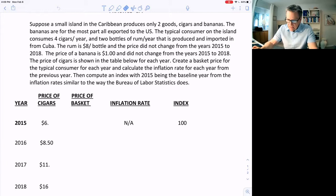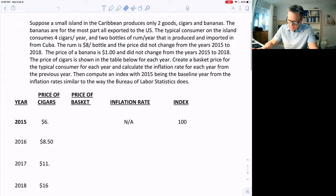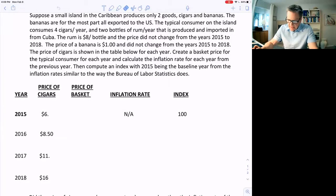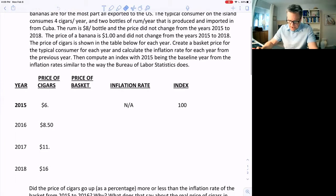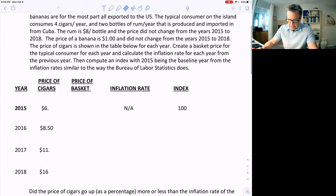Price of bananas is a dollar and did not change from 2015 to 2018. The price of cigars is shown there, so in 2015 it was $6, then $8.50 and $11.